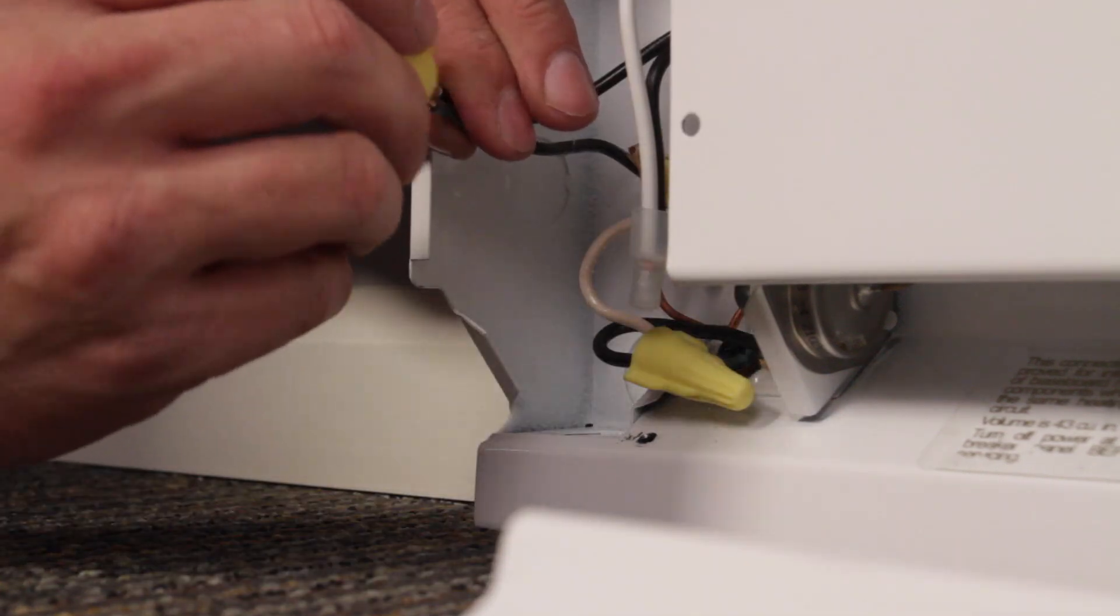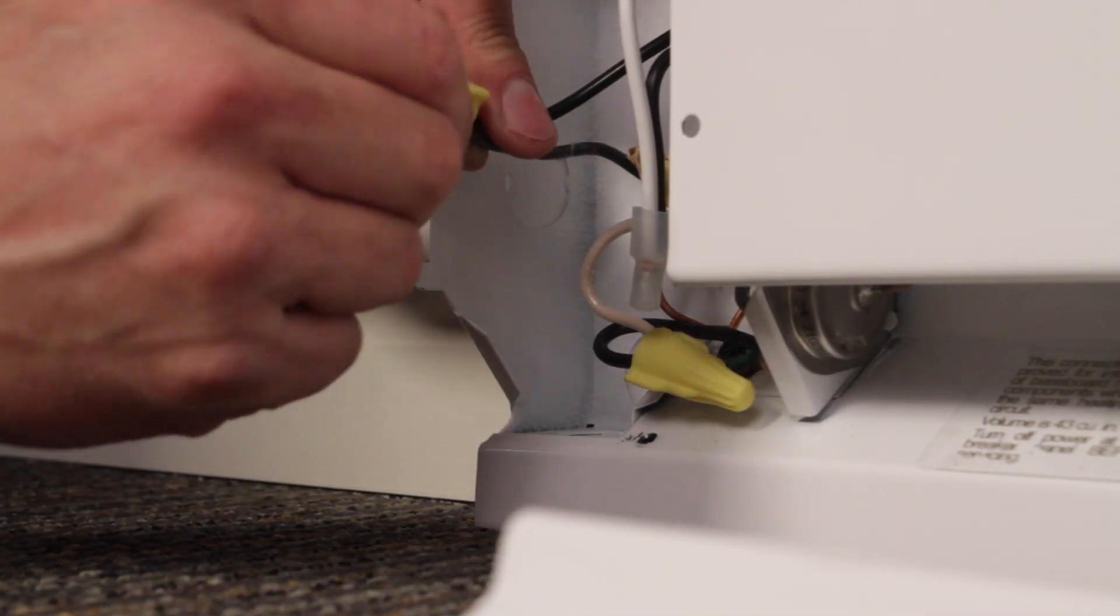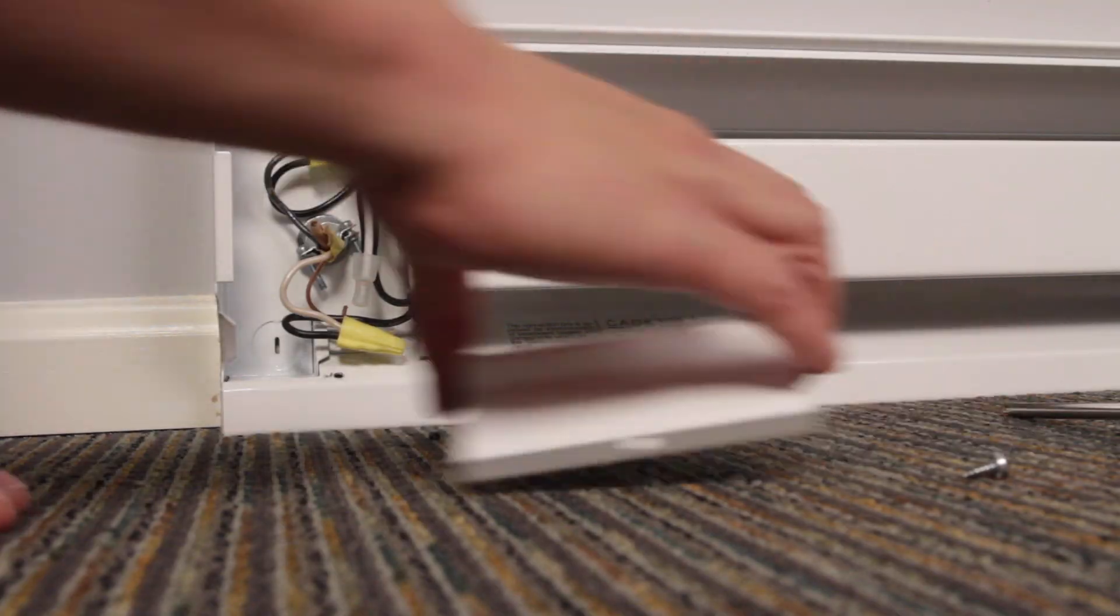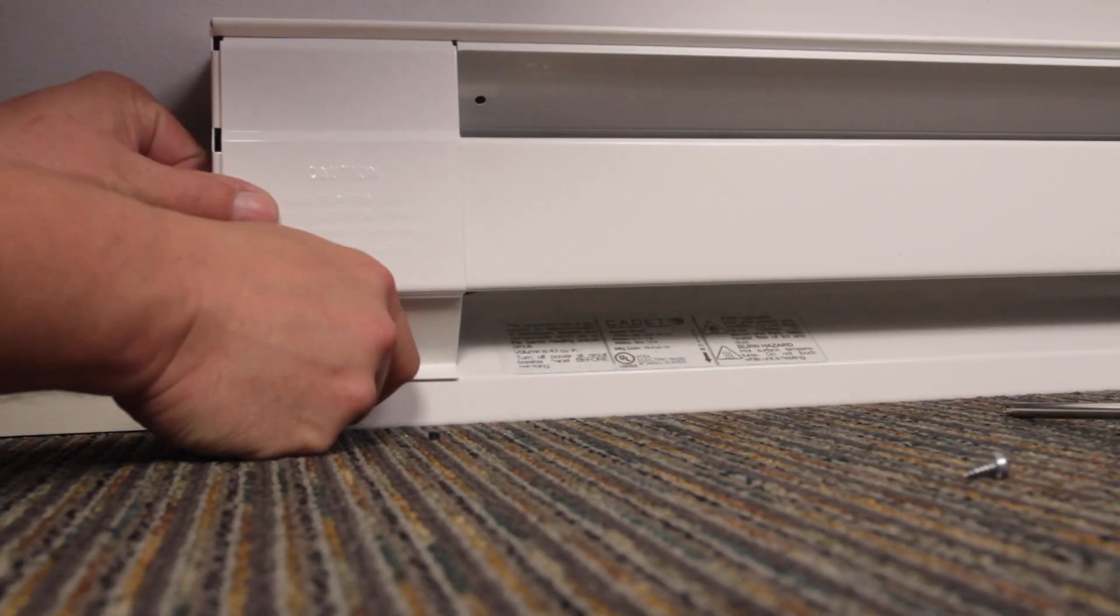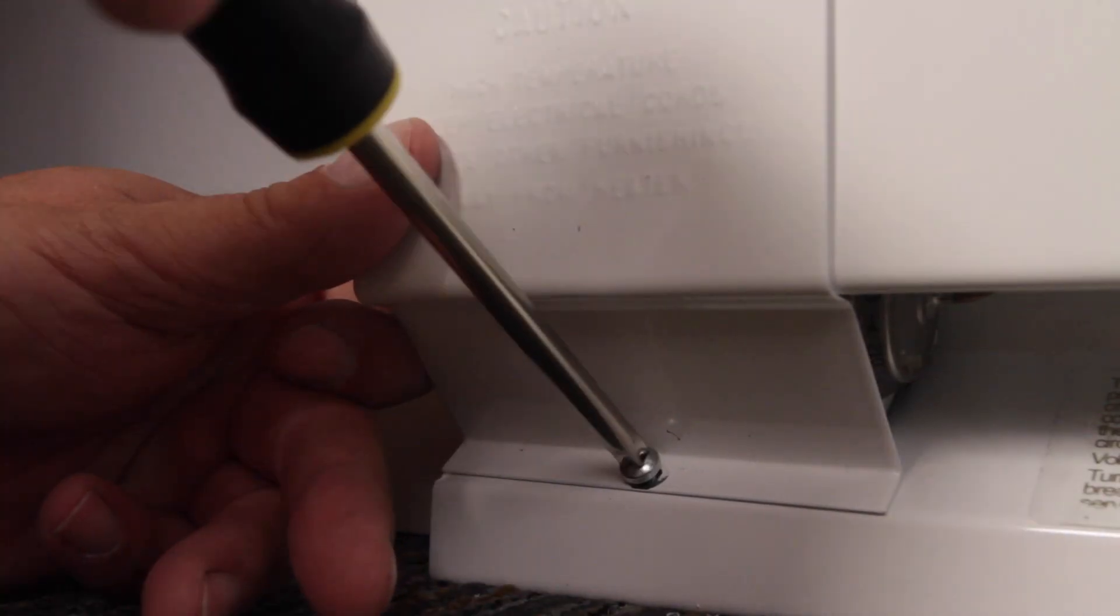Now connect the last black wire from the heater to the black wire from the wall. Now safely tuck all wires in the heater wiring compartment and attach cover plates with the provided screw.